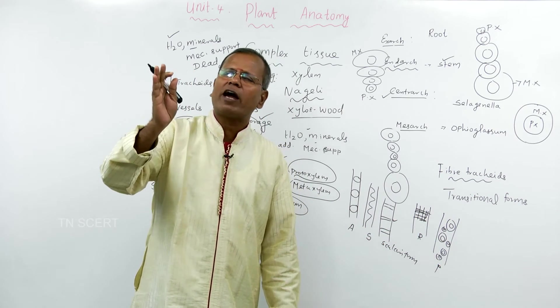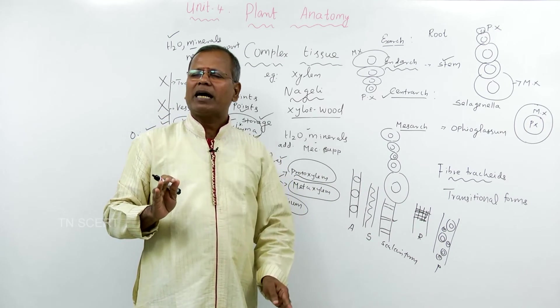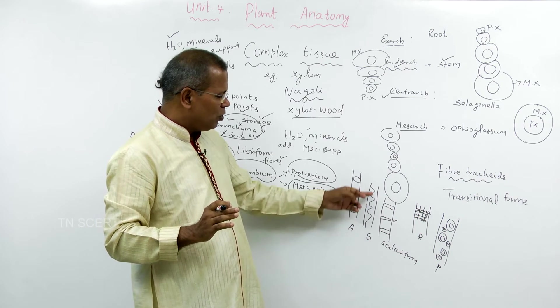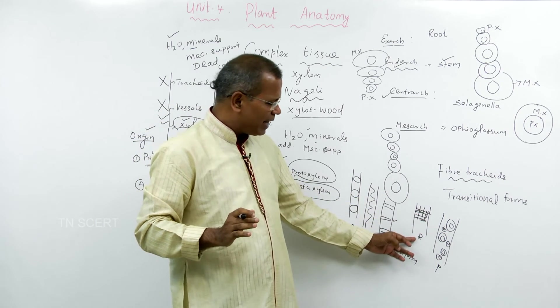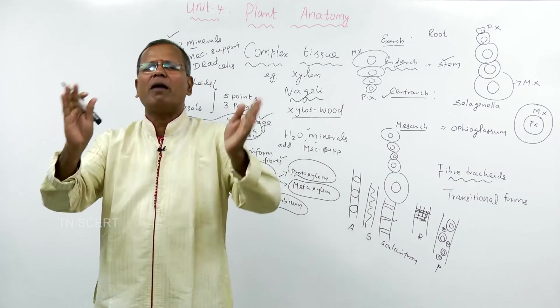Tracheids as well as vessels, due to the deposition of cell wall material, various thickenings are seen on their cell wall, namely annular, spiral, scalariform, reticulate and pitted. These are the common points.